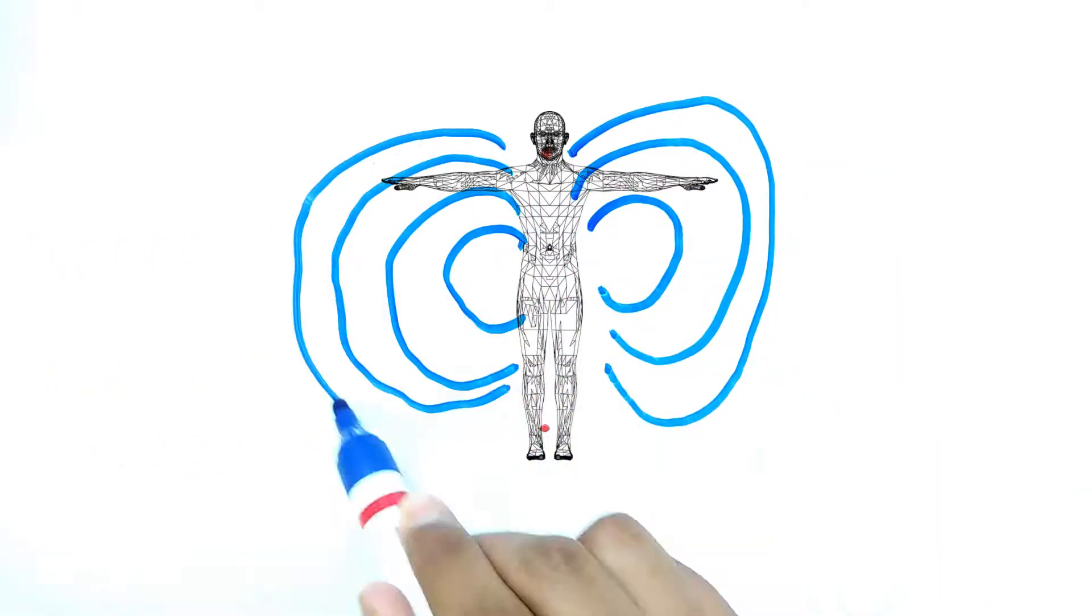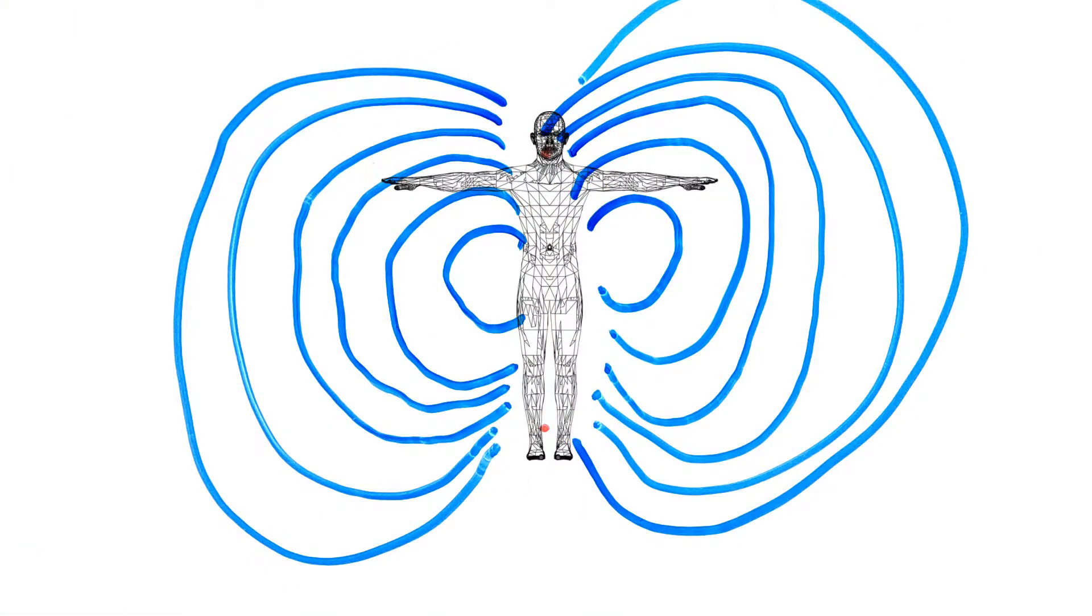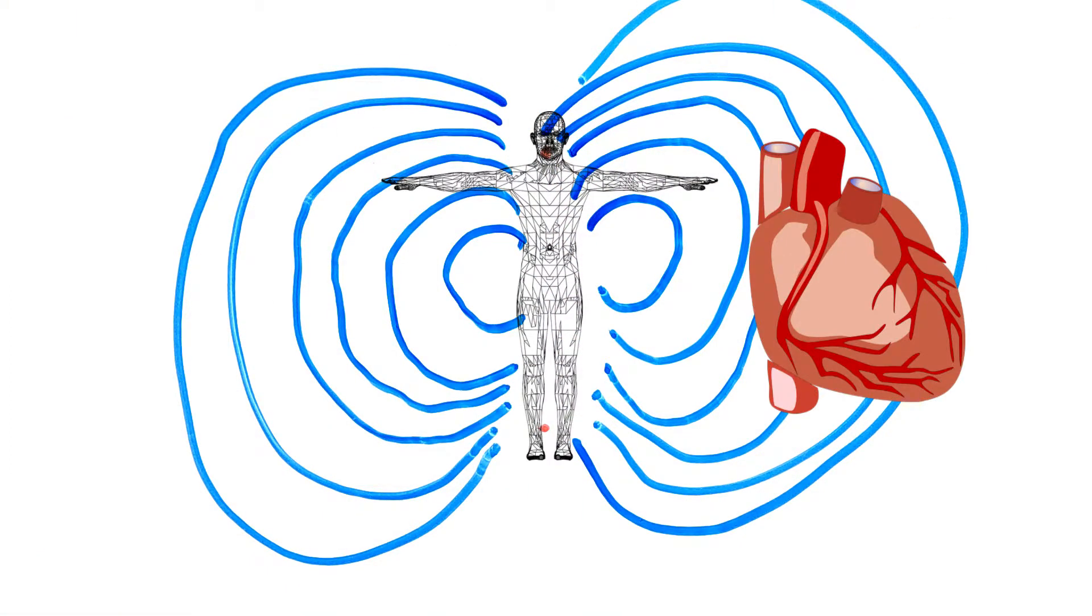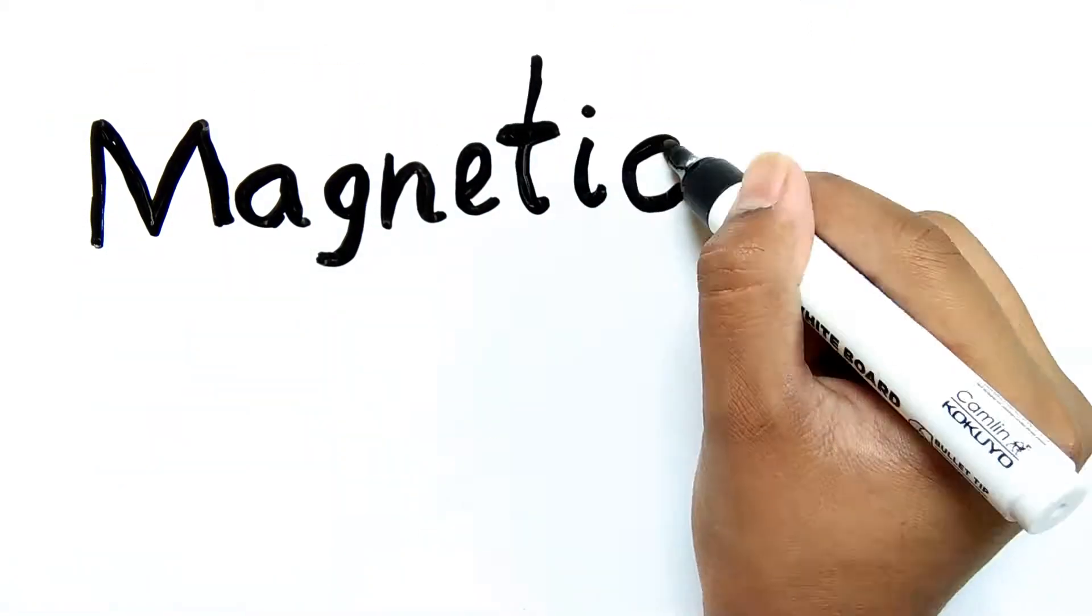The human body also has a magnetic field which is created with the neurons flowing inside the nerve cells which covers our whole body. Our heart has a more strong magnetic field.